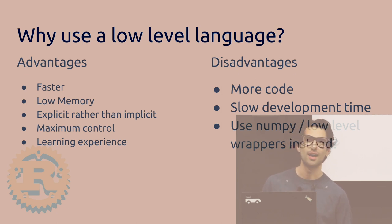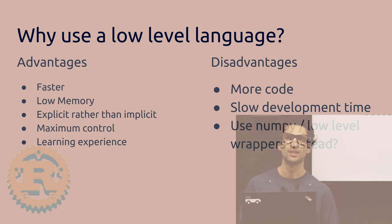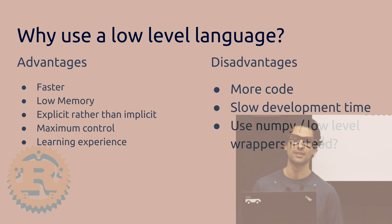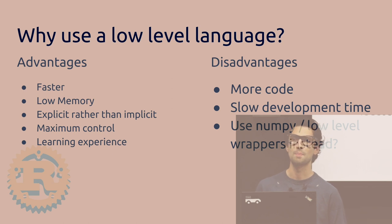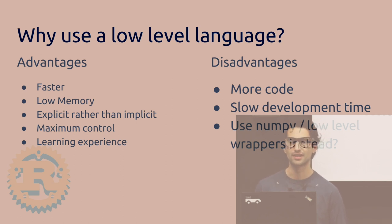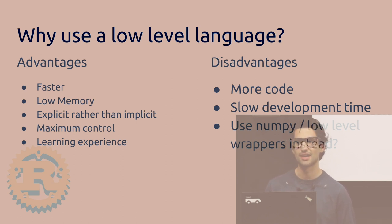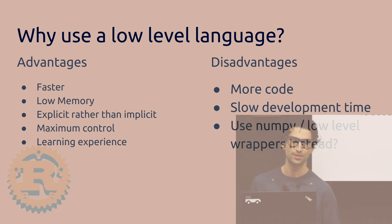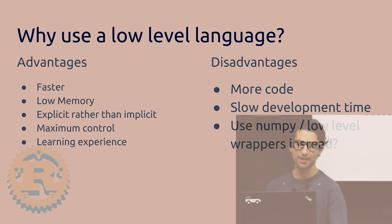On the other hand, this also means you could use low-level code with Python. For example, you could use Rust instead of Fortran to extend Python — because in SciPy, Fortran is used to extend Python.